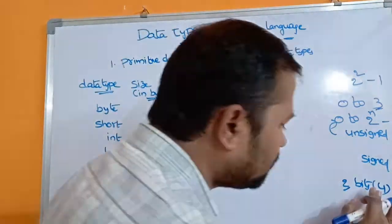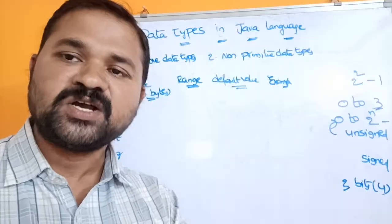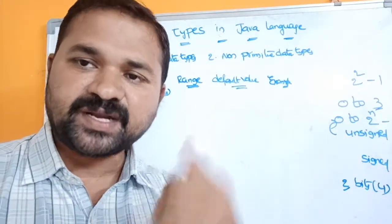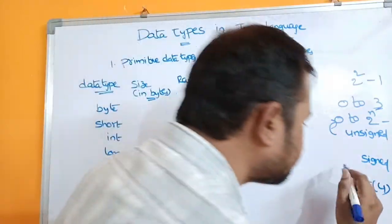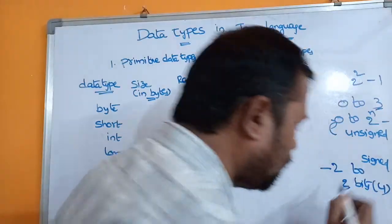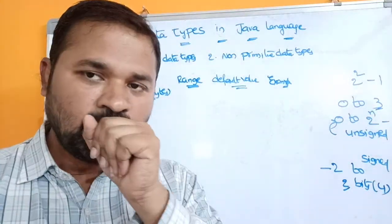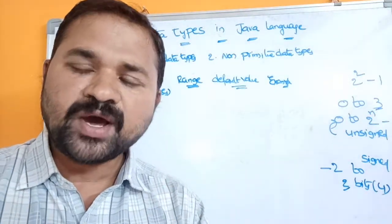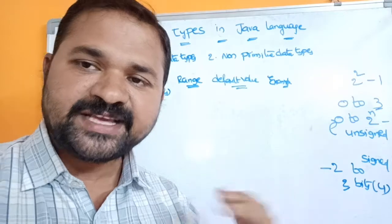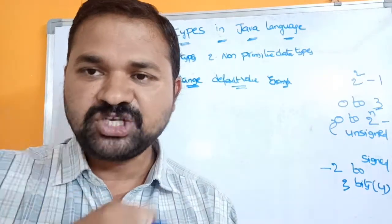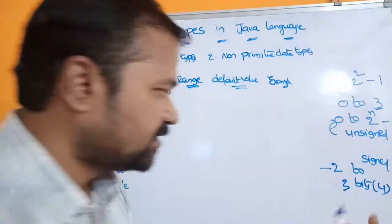Now let us derive the formula for signed data type. We can still store four numbers total, but signed data type means we can store negative numbers as well as positive numbers. The maximum negative number is -1, then -2. So we can store -2 and -1 as negative numbers. Out of four numbers, the first two are negative and the next two are positive: 0 and 1.